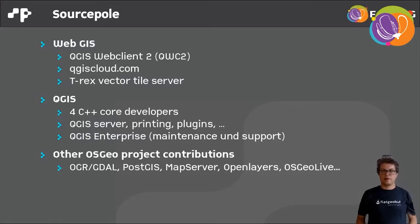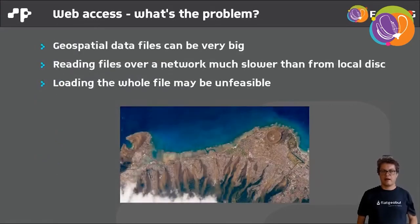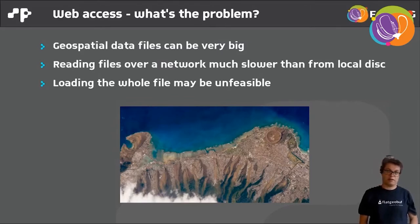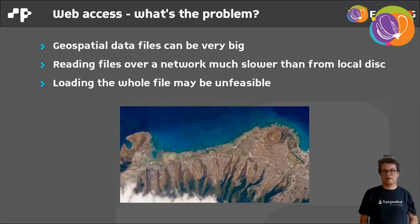My topic today is accessing geodata over the web, and there are a few problems with that. Geospatial data can be very big, and reading over the network is usually quite slow. When you're working with a desktop GIS, you usually have to download the file first. This can be unfeasible for satellite imagery, for instance, when you want to access many images and you don't have enough space locally.